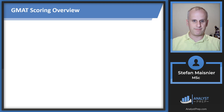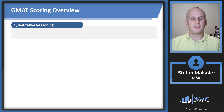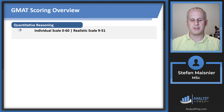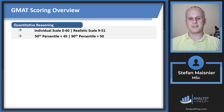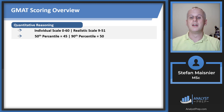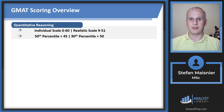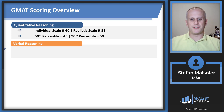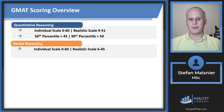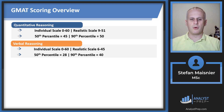For the quantitative section, your individual scaled score is 0 to 60, with a realistic scale of 9 to 51. The 50th percentile score is roughly a 45 and the 90th percentile is a 50. People tend to do better on the quantitative in aggregate because math is a universal language — English is not. On the verbal section, the individual scale is 0 to 60 but the realistic scale is 6 to 45, which is slightly lower, though there is more room to grow at the higher end of verbal than at the higher end of quantitative.